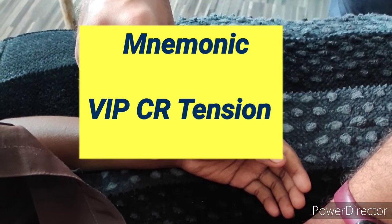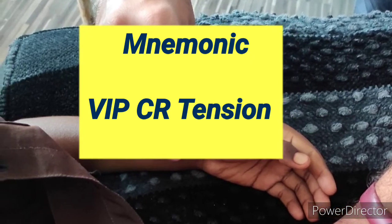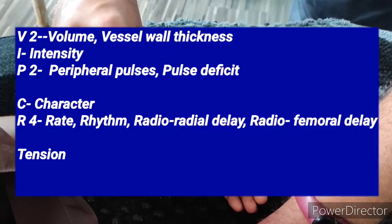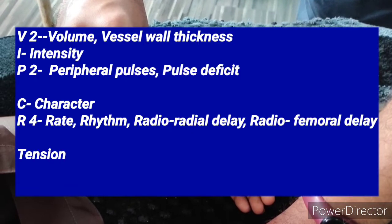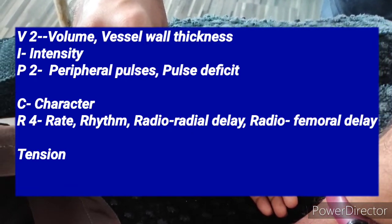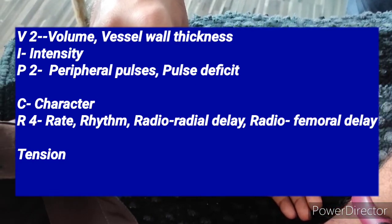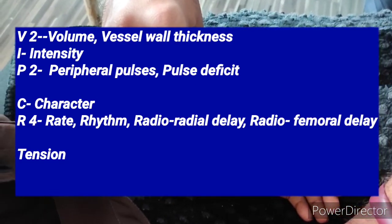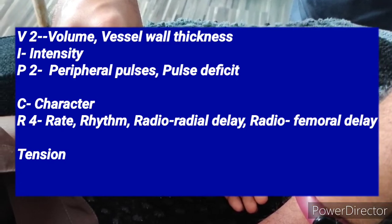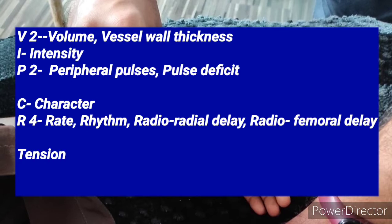To easily remember all these points, use the mnemonic VIPCR-Tension — 'very important person, class representative tension.' V stands for volume and vessel wall thickness, I for intensity, P for peripheral pulses and pulse deficit, C for character, R for rate, rhythm, radio-radial delay and radio-femoral delay, and the last is tension.